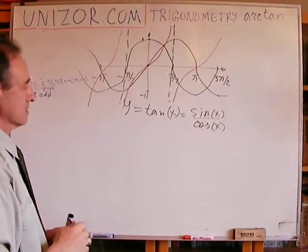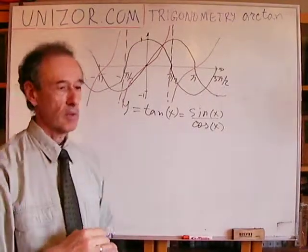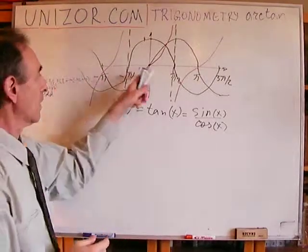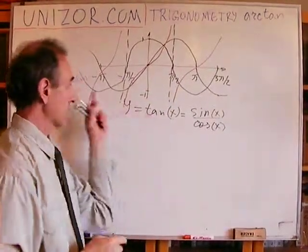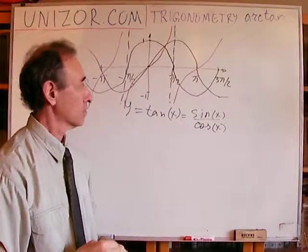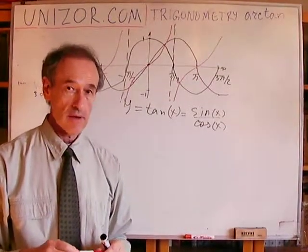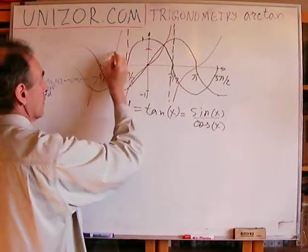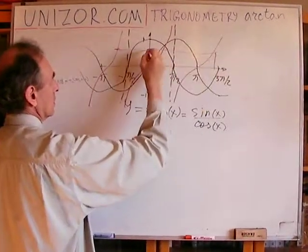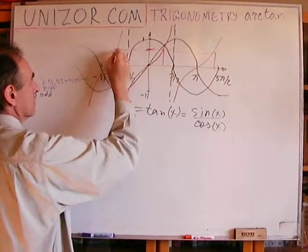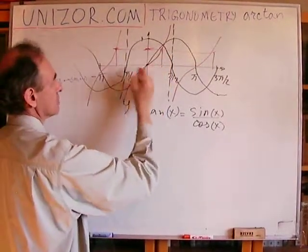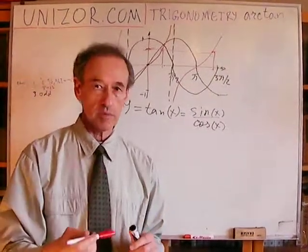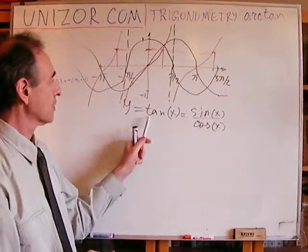All right, so knowing what the tangent is, now let's talk about what can we say about inverse function, arctangent. Well obviously this function, as I have represented it in red, does not have an inverse function because for any value there are multiple arguments. The function, in each of those arguments, the function takes the same value. So you cannot determine by the value of the function tangent, by having y defined, you cannot define x.